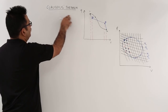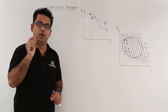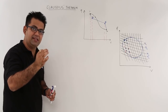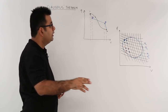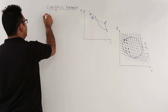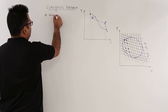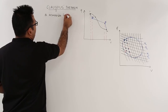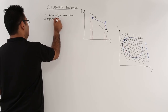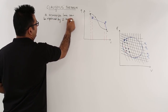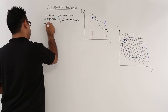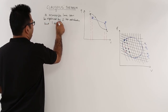Now let's put our focus to the Clausius theorem. Clausius theorem states that a reversible line — let's say from point 1 to point 2 — can be replaced by two reversible adiabatics and one reversible isothermal line.